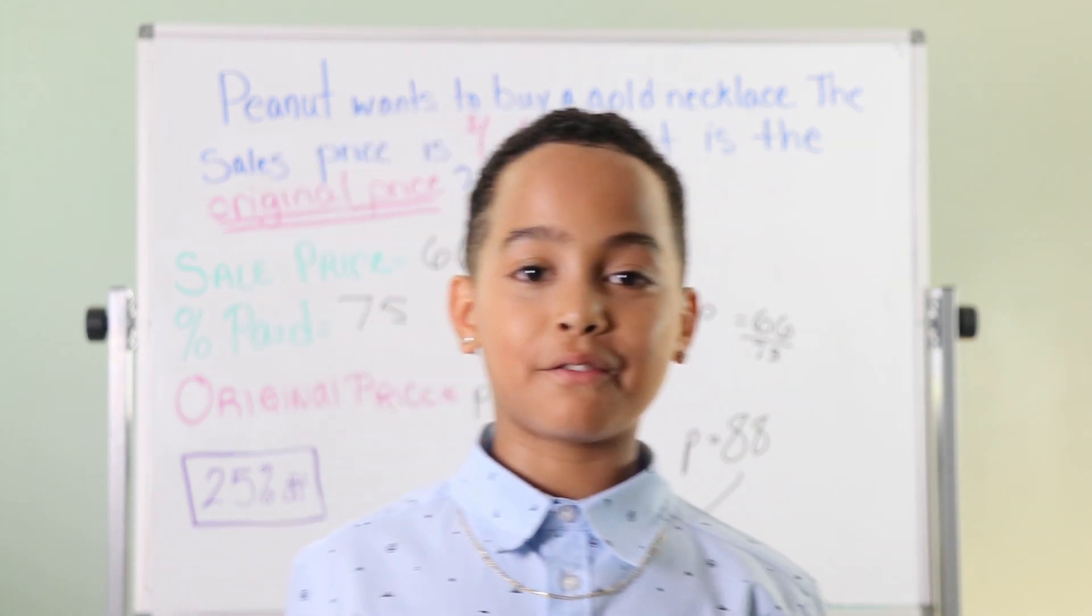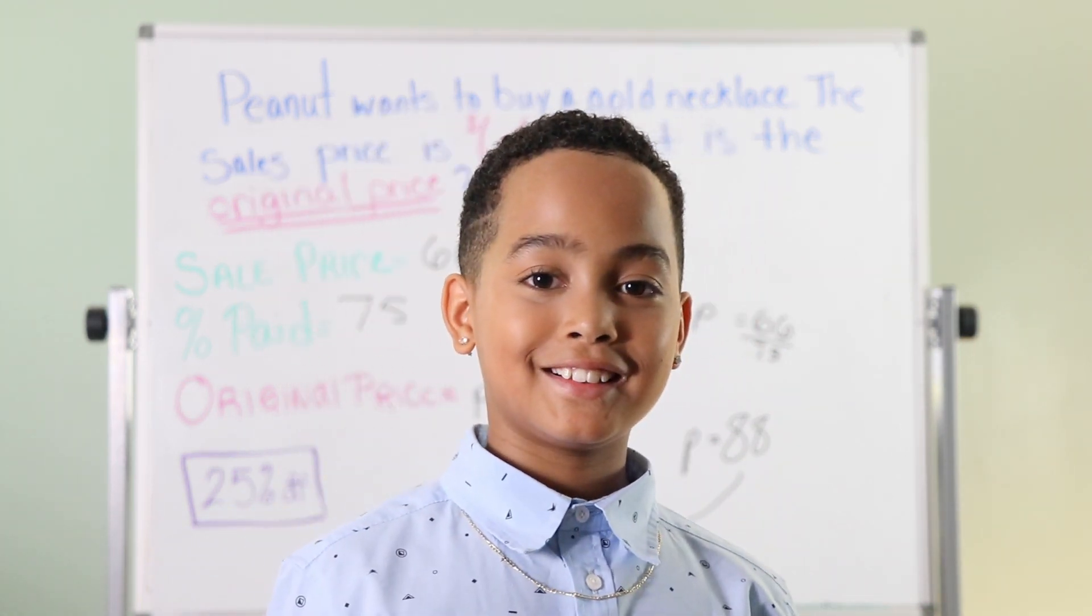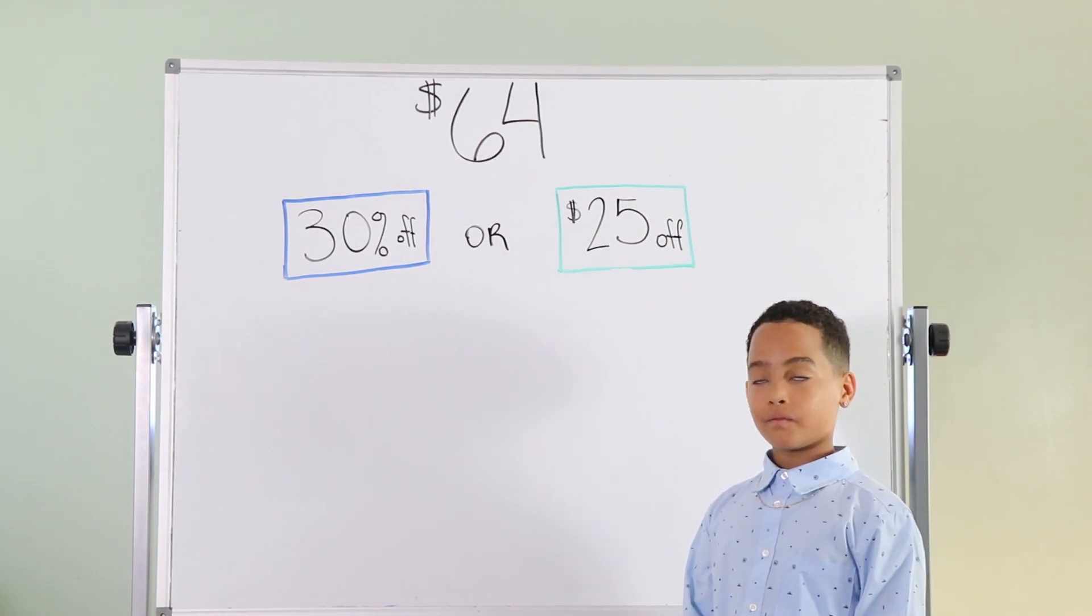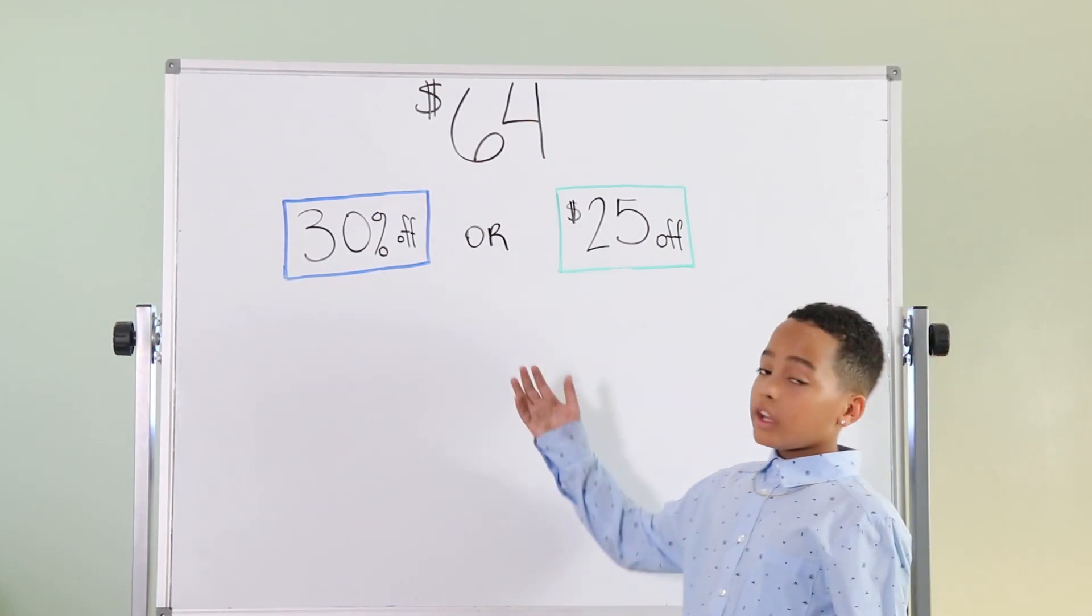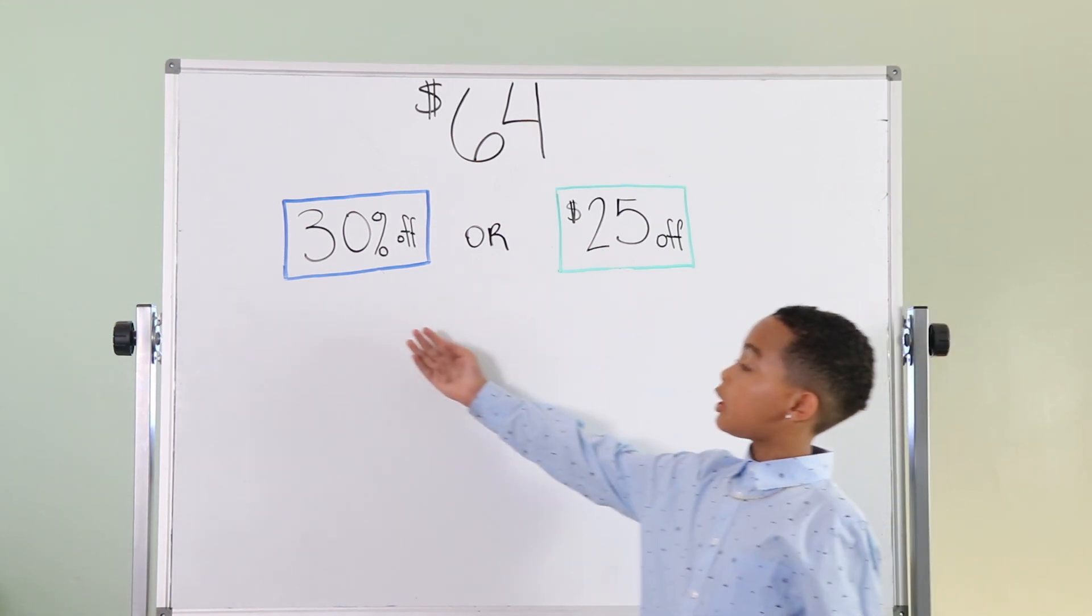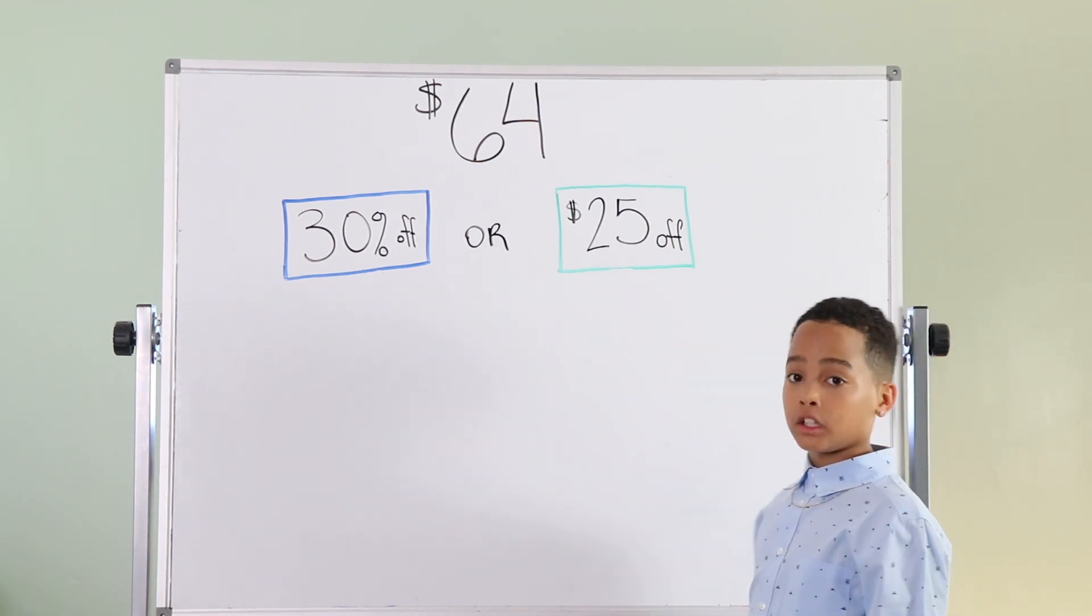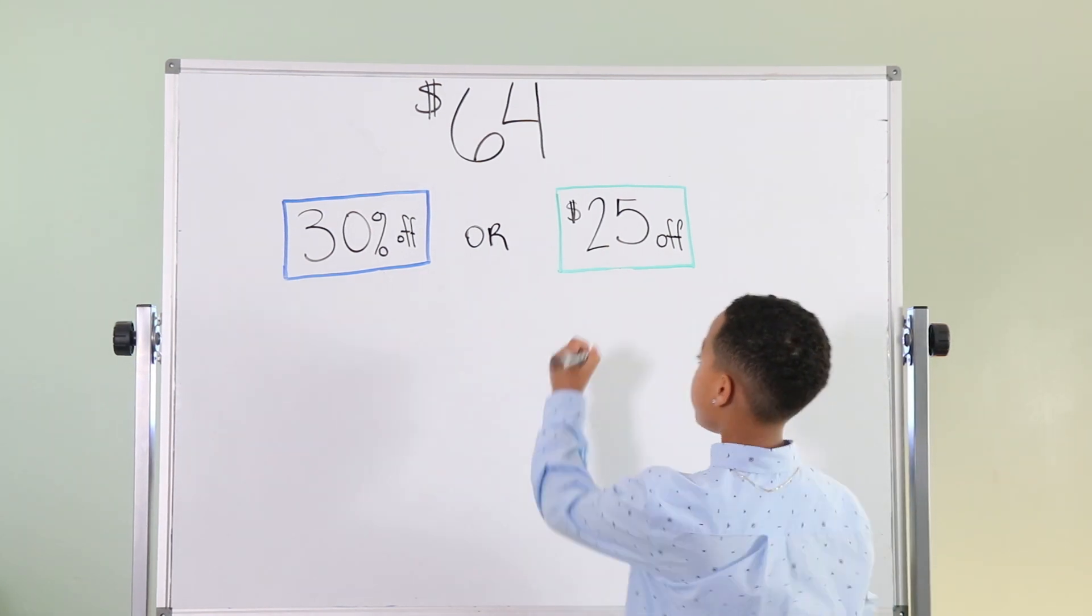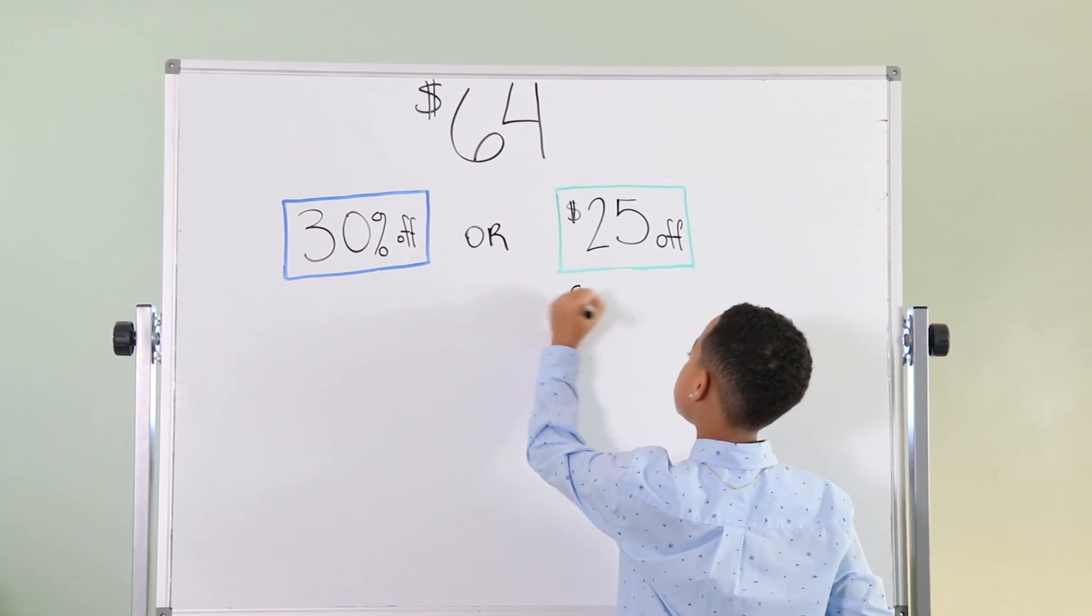And that's how you find a better deal. So, if you had two deals and you can only pick one, which one would you take? 30% off or $25 off? I'm going to show you how you calculate it. So first, the original price is $64.